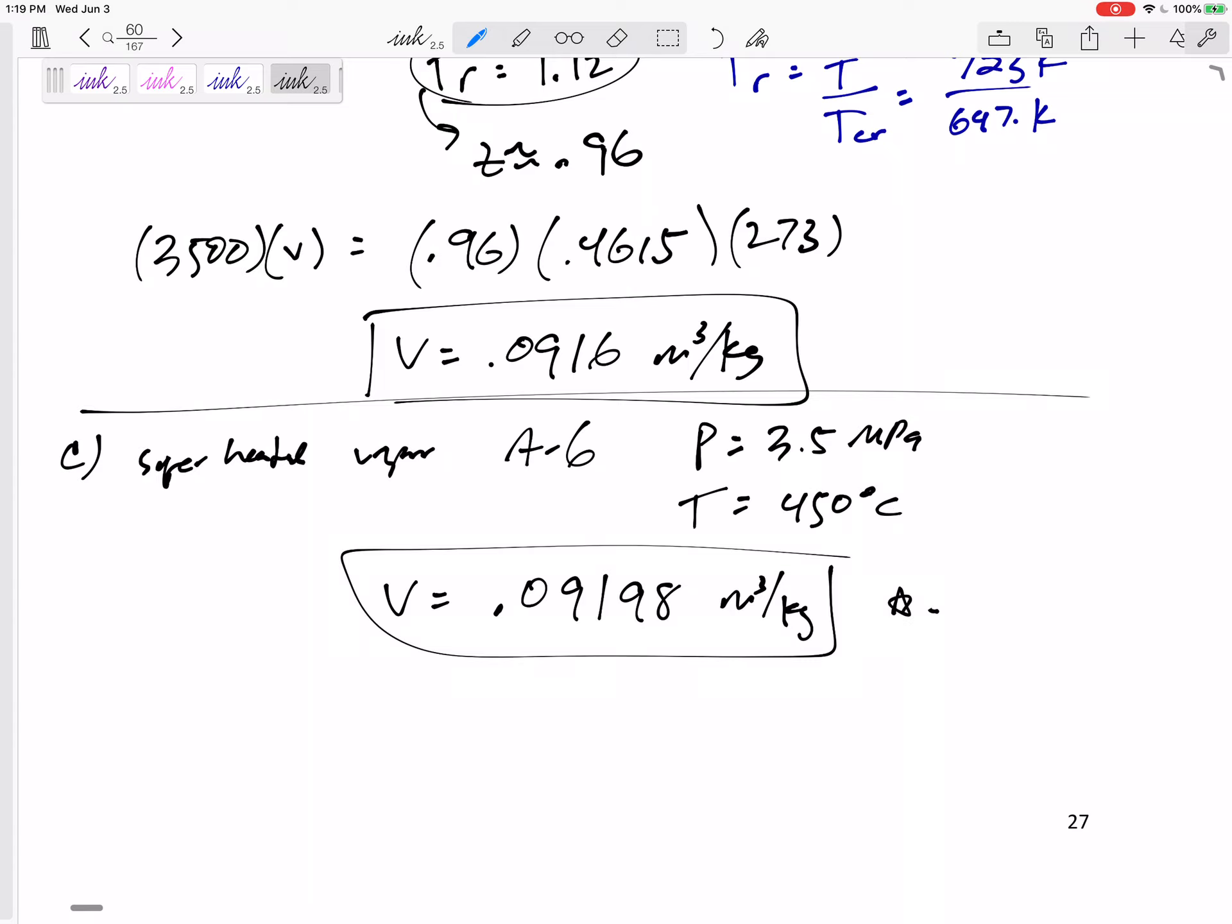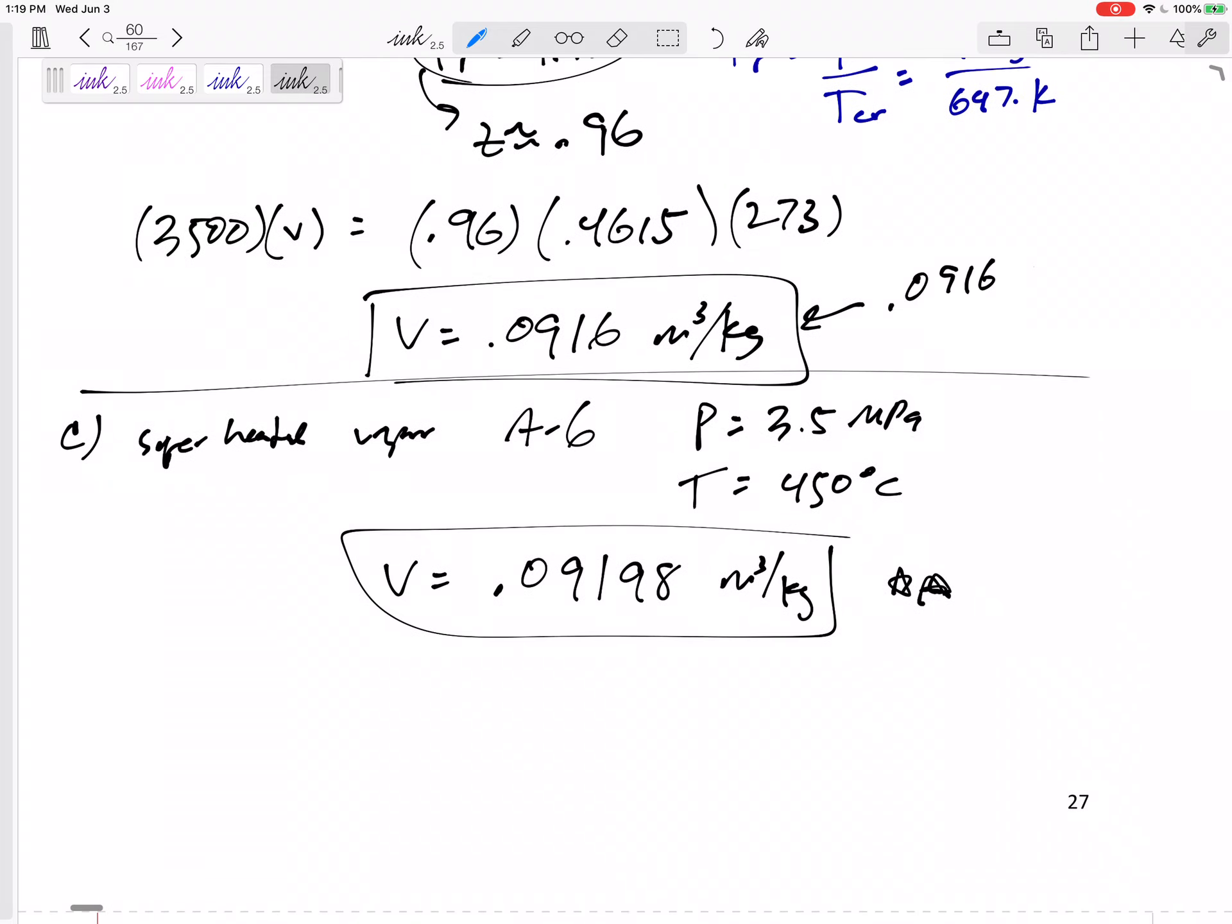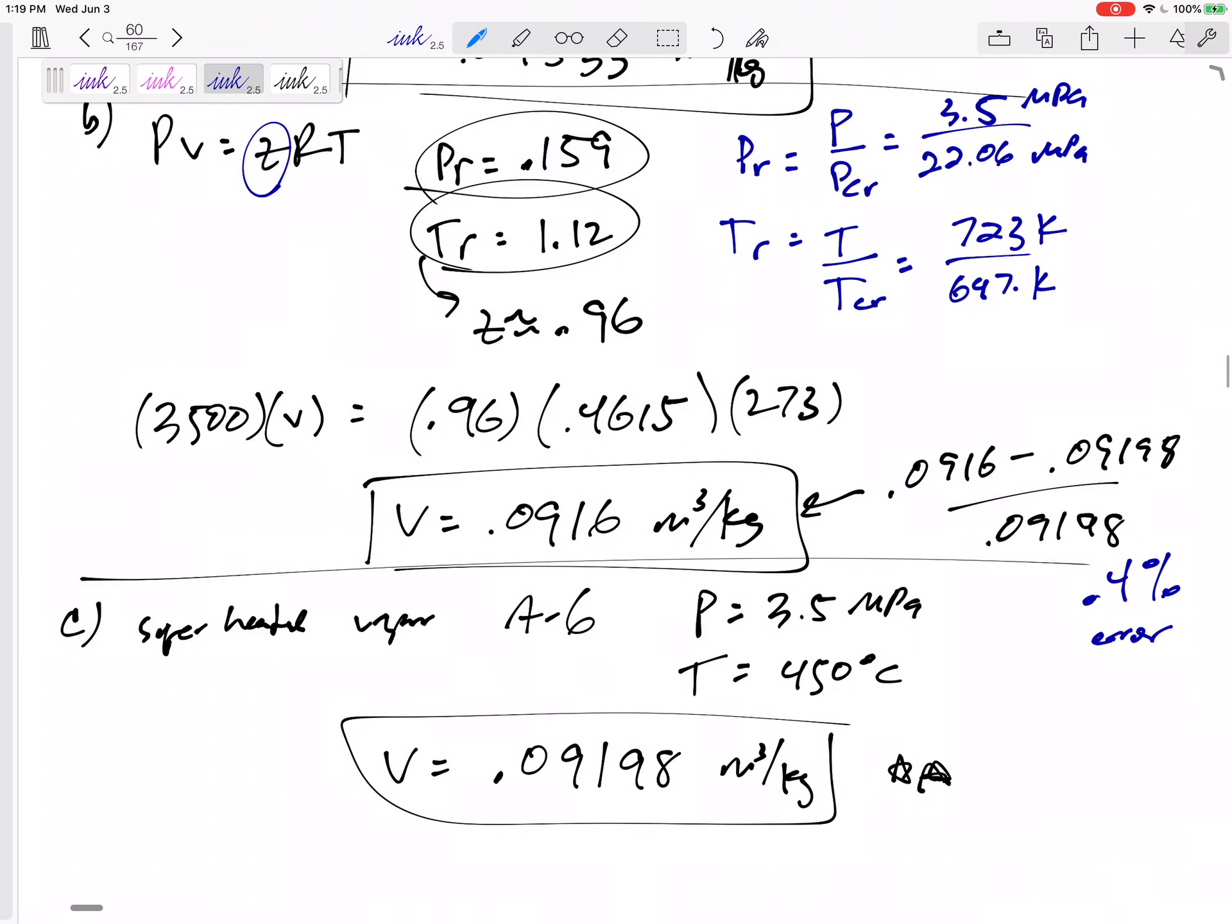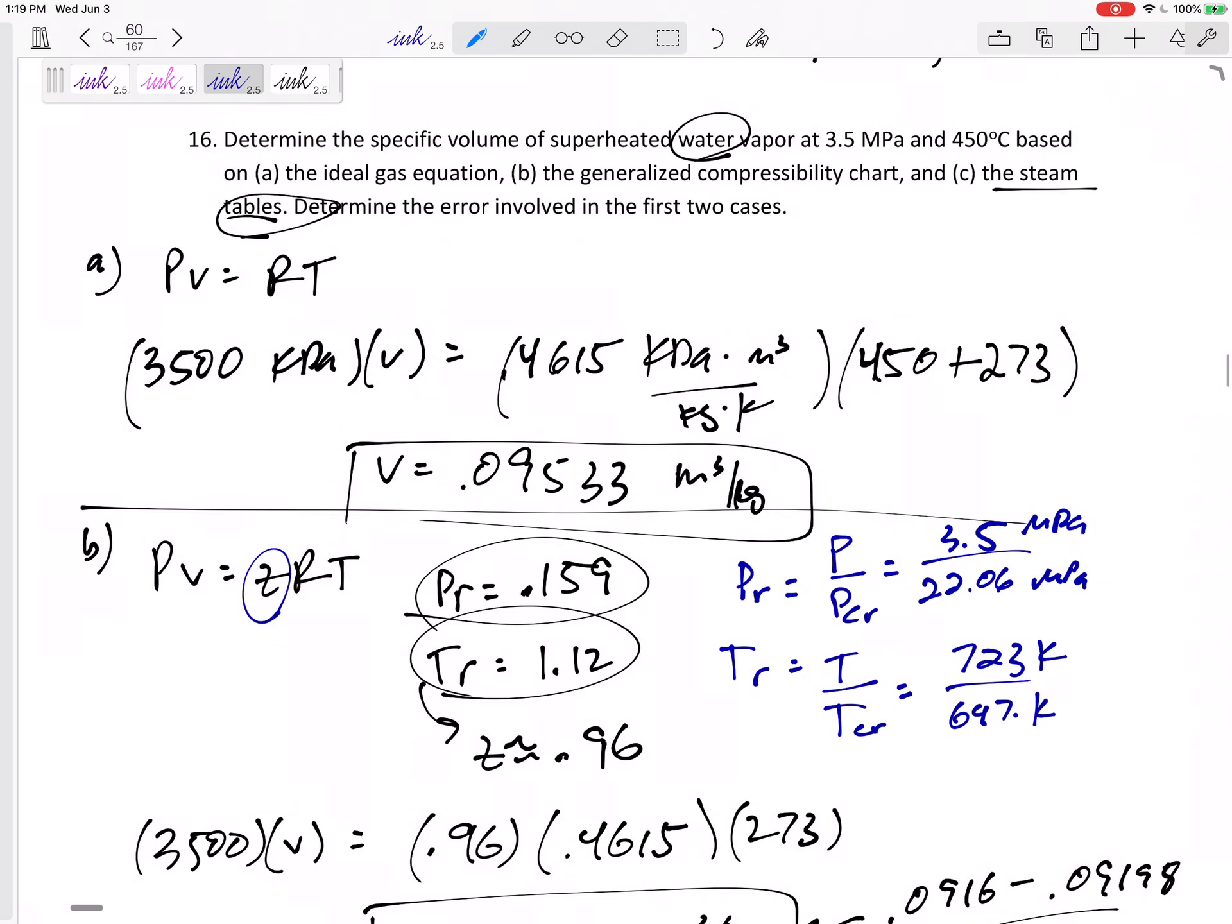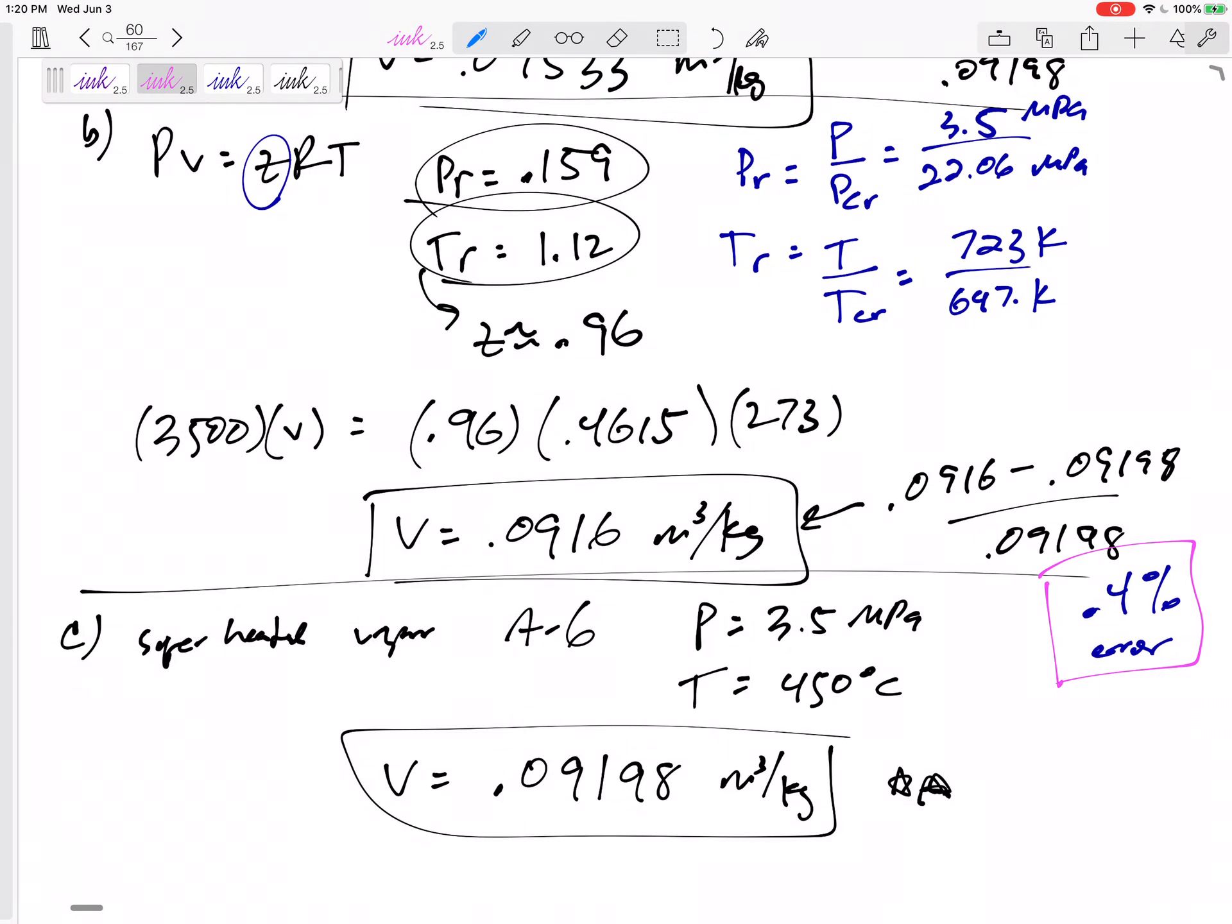Okay. So if this is true, then what is the error right here? 0.0916 minus 0.09198 divided by 0.09198. I've got an error of 0.4% error for the ideal gas with the compressibility chart, as opposed to this error, 0.09533, 0.09198 divided by 0.09198. I've got an error of 3.7%. Not bad, right? But we got it really close by using the compressibility chart.